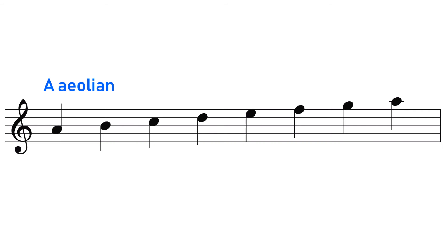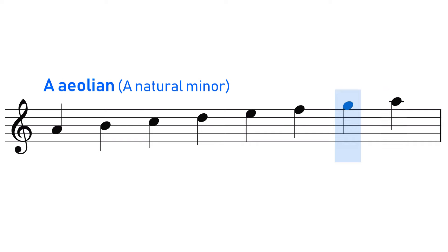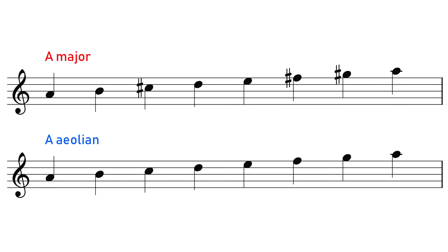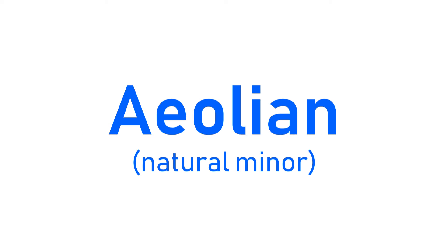The Aeolian scale, or the Aeolian mode, is exactly the same thing as the natural minor scale. We can think of it as the major scale but with a lowered third, lowered sixth, and lowered seventh degree. If we don't count the major scale itself, Aeolian is probably the most common mode you'll come across, particularly in rock and pop music.